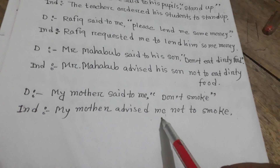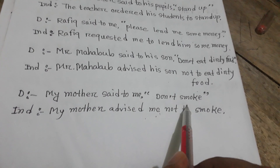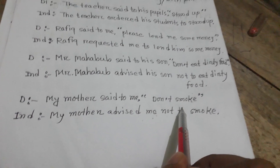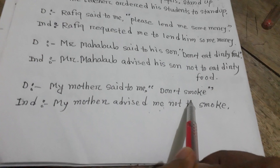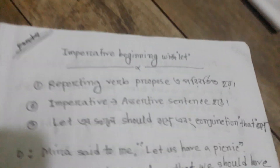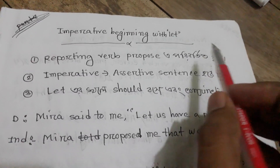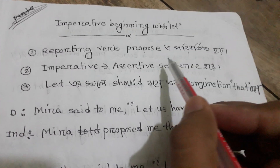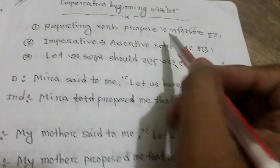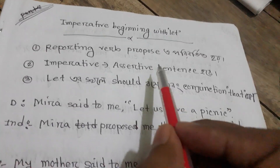Now let us look at the imperative sentence beginning with 'let.' This type of imperative sentence requires special treatment. In indirect narration, we use 'propose' as the reporting verb and the conjunction 'that.'